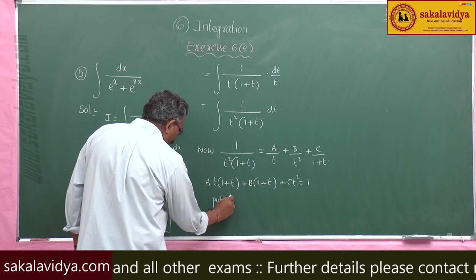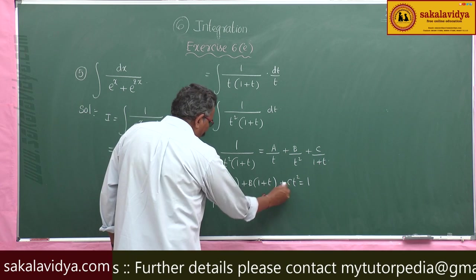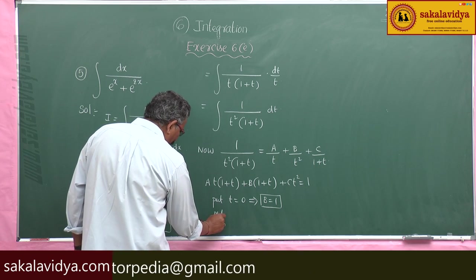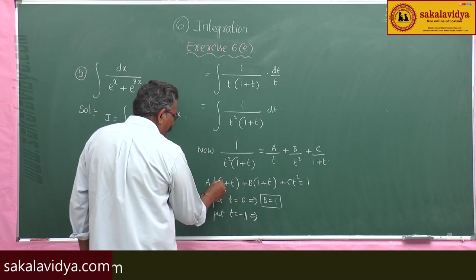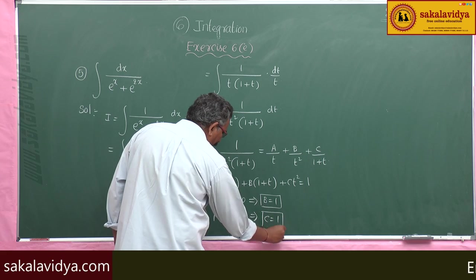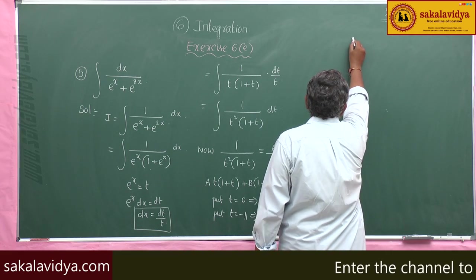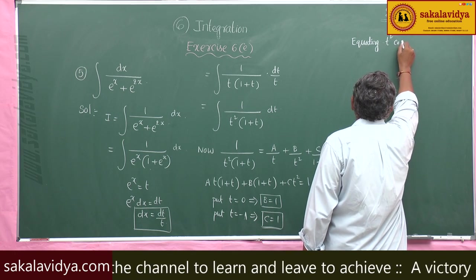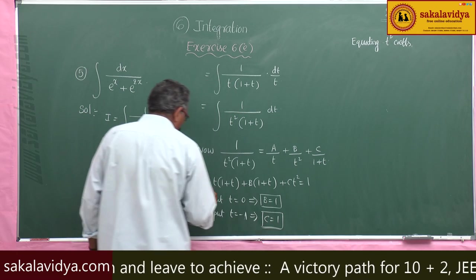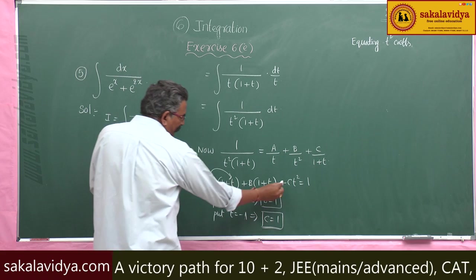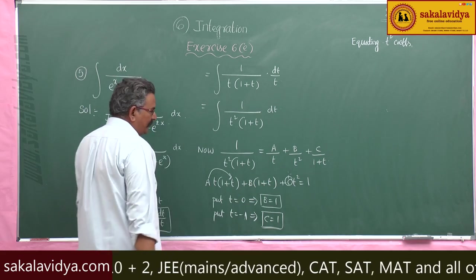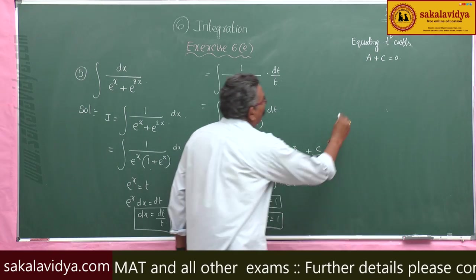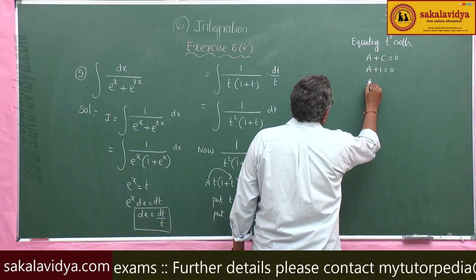Put t = 0: the A and C terms vanish, giving B = 1. Put t = −1: the A and B terms vanish, giving C = 1. Equating coefficients of t²: A + C = 0, and since C = 1, we get A = −1.